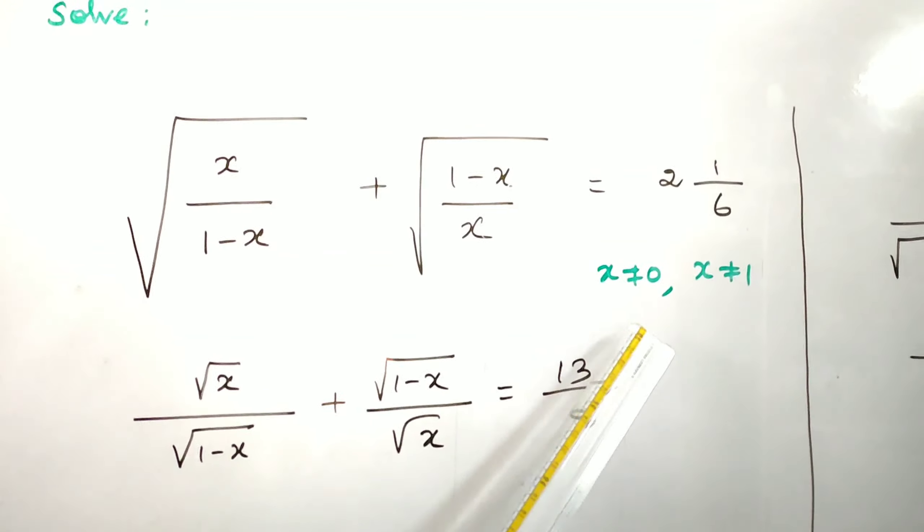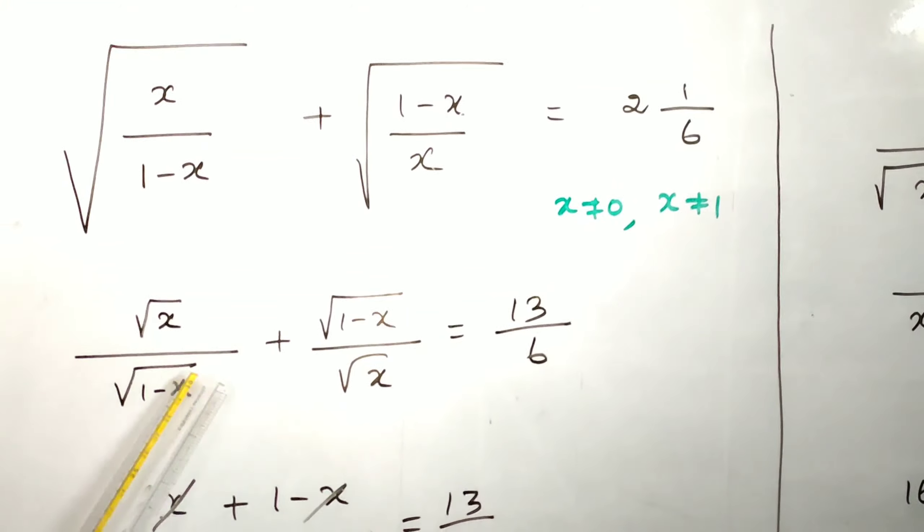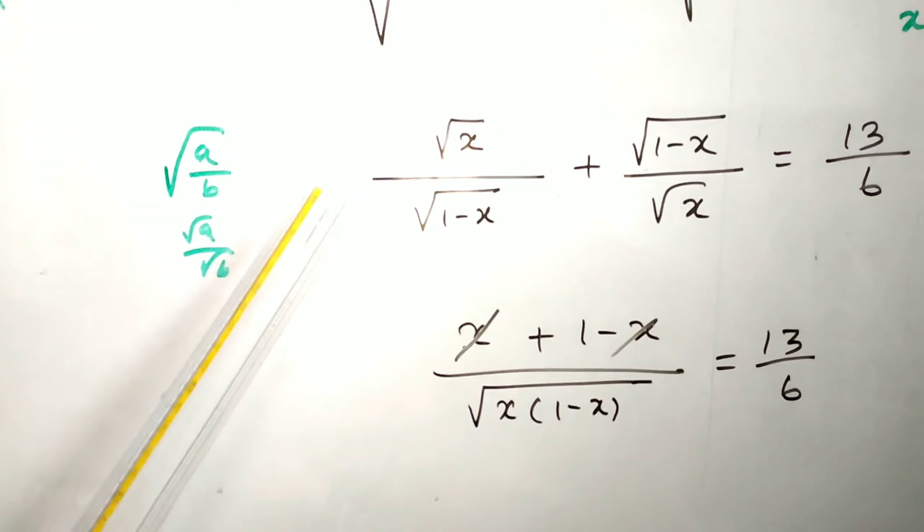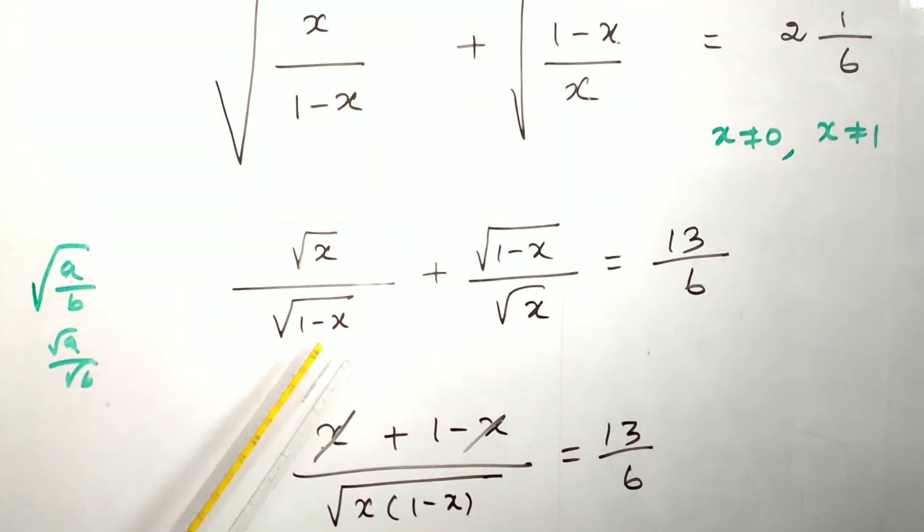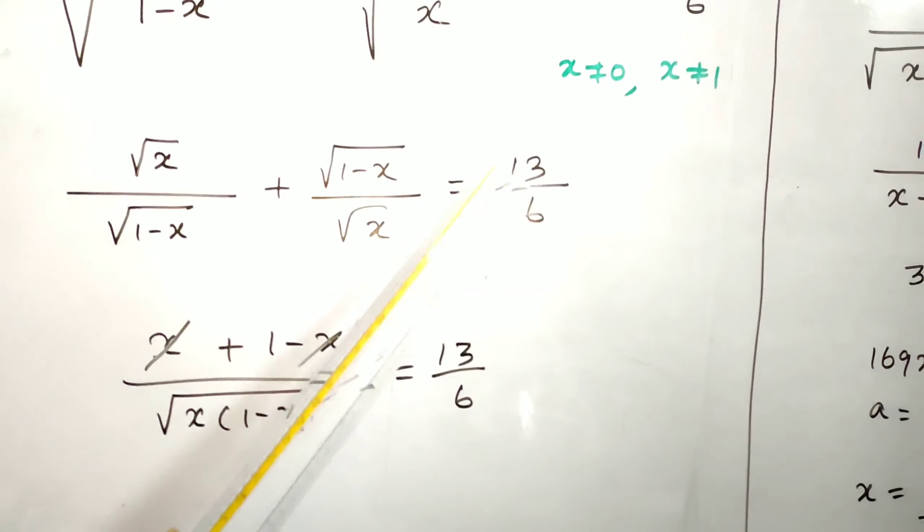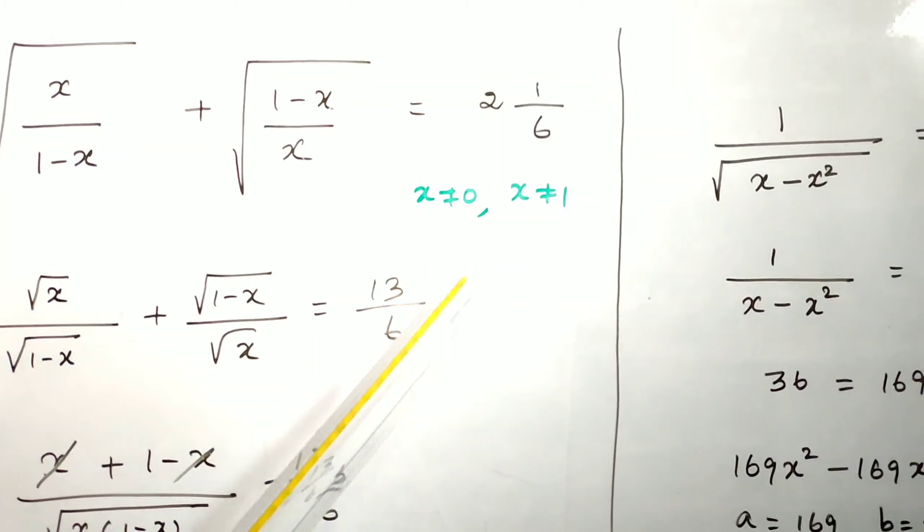Root a by b means root a by root b, so we can apply here. Root x by root of 1 minus x plus root of 1 minus x by root x. Change this improper fraction: 6 times 2 is 12, 12 plus 1 is 13 by 6.